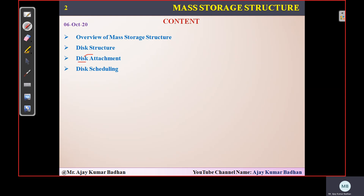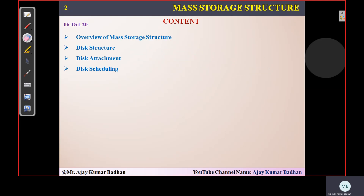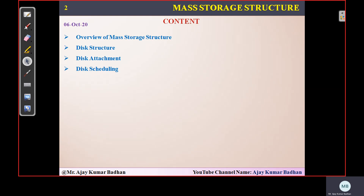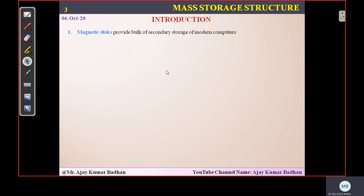The disk is your secondary storage device, used to store data. It is non-volatile in nature, meaning even if there is a power failure, the data will not be deleted. But in RAM, the data will be deleted. Finally, we will discuss disk scheduling — how the system accesses data from secondary storage, similar to process scheduling.